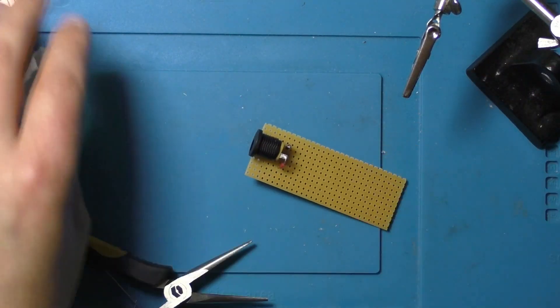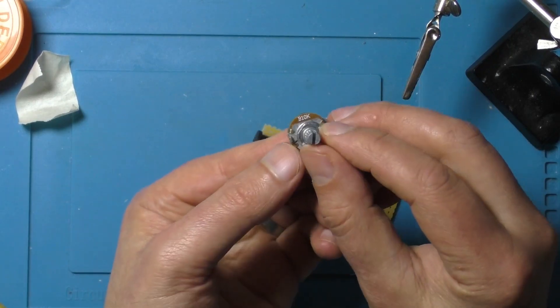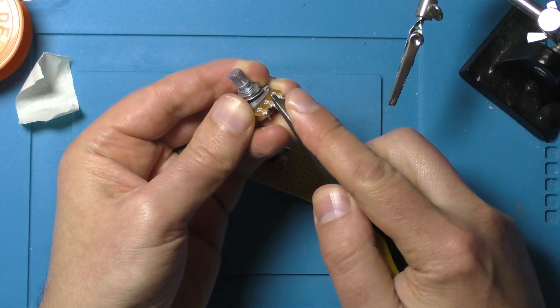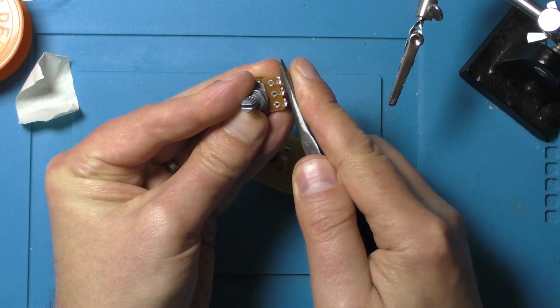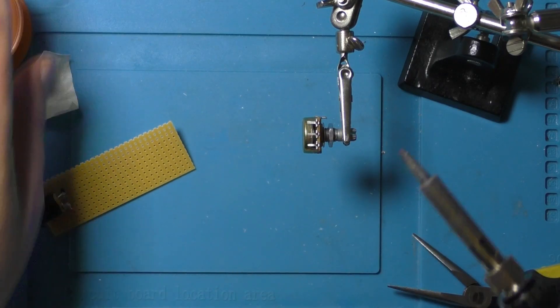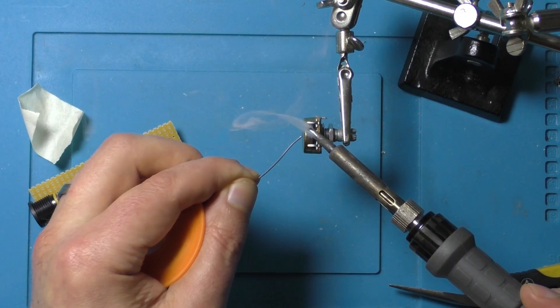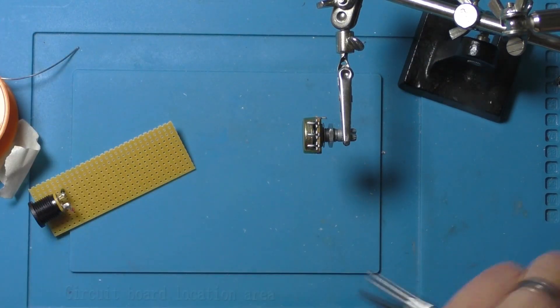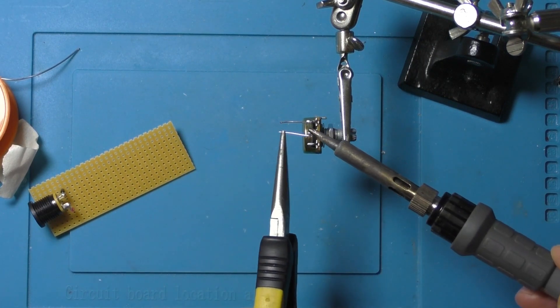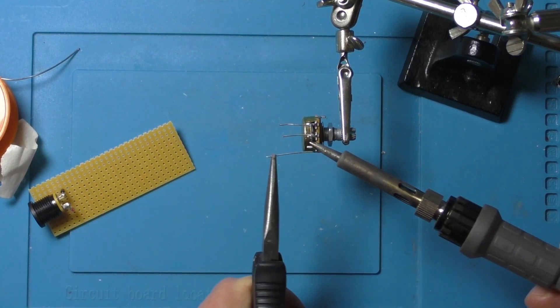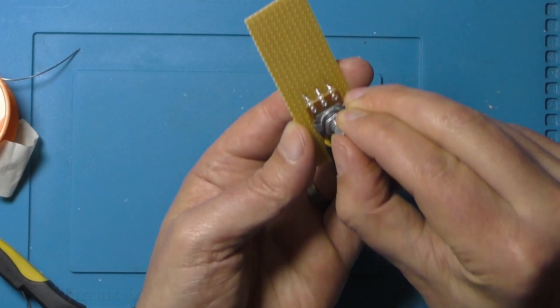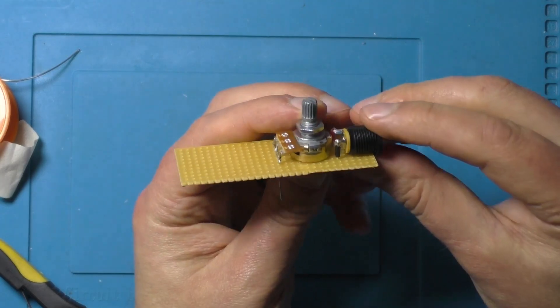Okay that's the power supply now the potentiometer. Again I'm having to solder some little feet onto this because the pins aren't long enough to go through the holes otherwise so just soldering some little wires on. Poke them through and solder them.